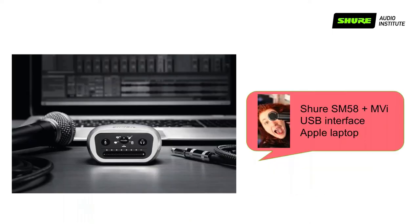For people who already have a drawer full of microphones at home — maybe they're in a band or a musician — the MVI is the solution. Ellen is using an SM58 plugged directly into the back of the MVI, which also has a headphone monitoring jack. It's super simple to use and provides great audio. She tends to sound best on conference calls because of this setup. It's a great way to get audio into most applications whether you already have a microphone or are looking to invest in one.